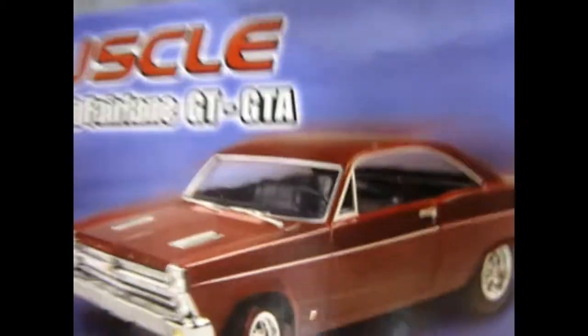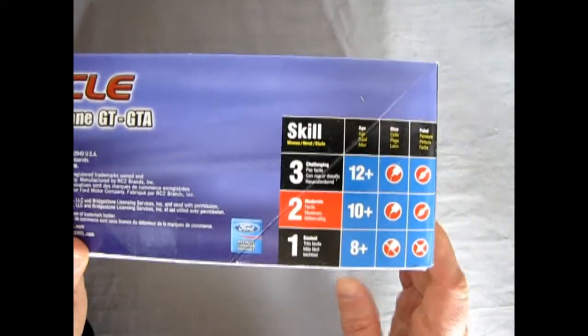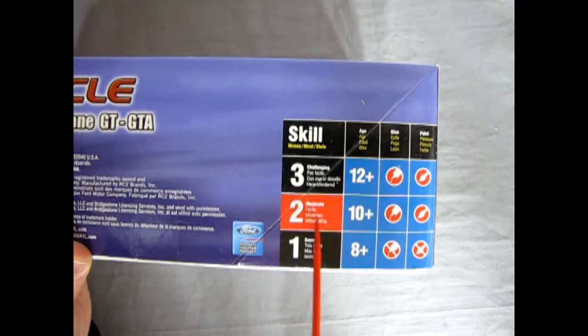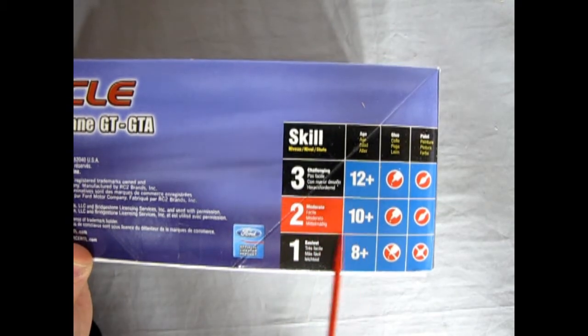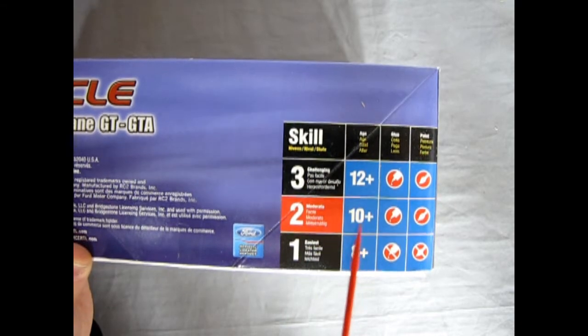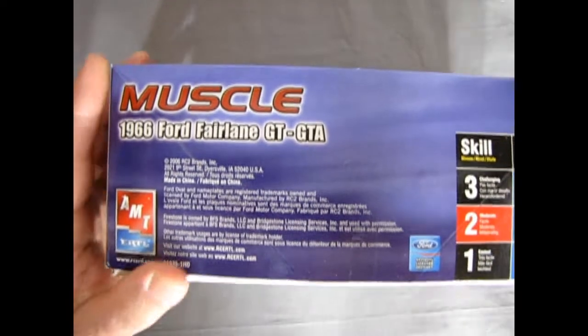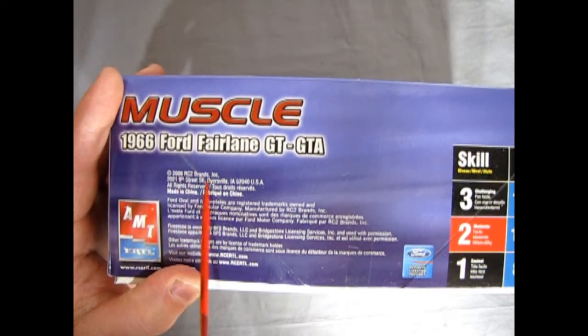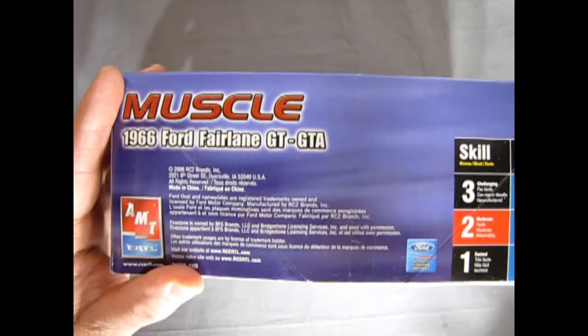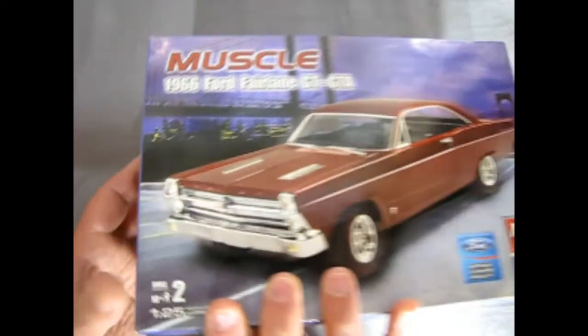Here we have the side of the box and of course this is a skill level 2 kit. Moderate difficulty. For ages 10 and up you will need glue, you will need paint and as we can see RC2 brought this out in 2006 which is pretty much near the end of RC2 as a brand before it got bought up by Round 2.